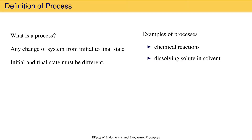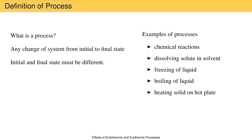Another example is dissolving a solute in a solvent. The initial state is the solute and solvent unmixed and separated. The final state is the solution. This is a process — a change from undissolved solute to dissolved solute. Other examples of processes include freezing of a liquid, boiling of a liquid, heating a solid on a laboratory hot plate, and physically lifting a beaker off a laboratory bench. These all represent changes between some initial condition and some final condition and can all be called processes.